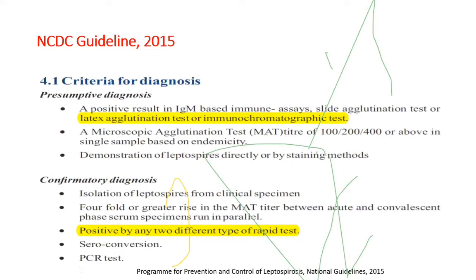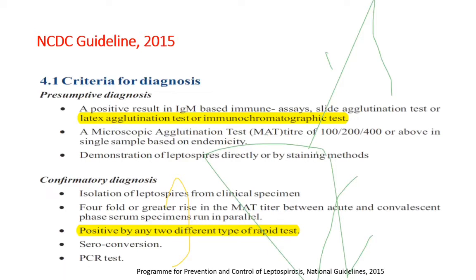NCDC guidelines: presumptive diagnosis is a positive result in IgM-based assay by latex agglutination, ELISA, or immunochromatographic test. For MAT titer, in high endemic areas a titer of 100 is considered positive; in low endemic areas, a titer of around 400 is taken. Confirmatory diagnosis includes four-fold rise in MAT titer between acute and convalescent sera in paired samples, or isolation of leptospira from clinical specimen, seroconversion, or PCR.